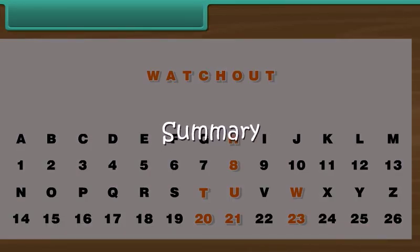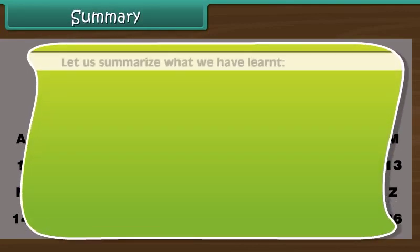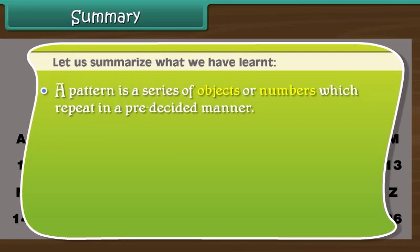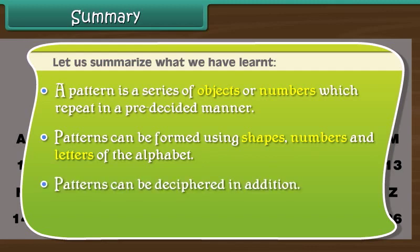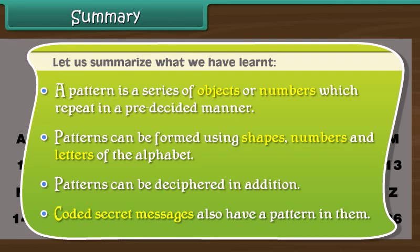Summary. Let us summarize what we have learned. A pattern is a series of objects or numbers which repeat in a pre-decided manner. Patterns can be formed using shapes, numbers and letters of the alphabet. Patterns can be deciphered in addition. Coded secret messages also have a pattern in them.